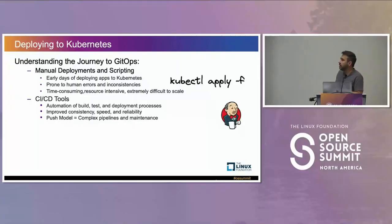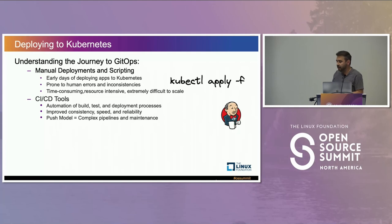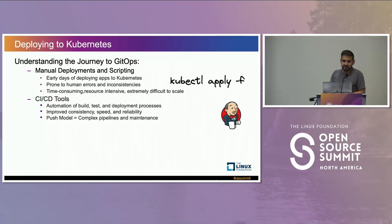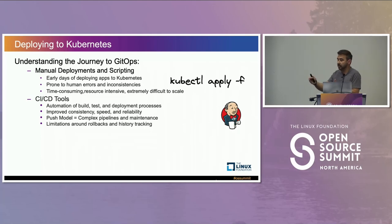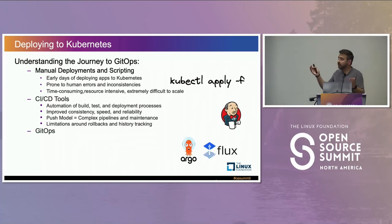Then there was adopting CI tools such as Jenkins — even today, a lot of enterprises use Jenkins to deploy applications. In some cases it works, in some cases it doesn't. It did improve consistency and speed of reliability compared to doing things manually. But it's still a push model — pushing YAML directly to a cluster, involving complex pipelines, maintenance, and organizations managing all these workflows. And if you want to roll back and see history or an inventory of what happened, it's just too difficult.